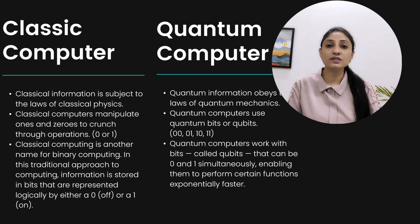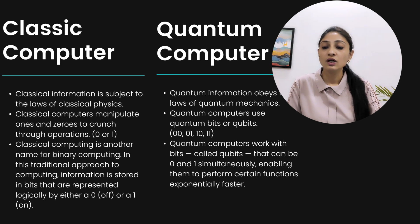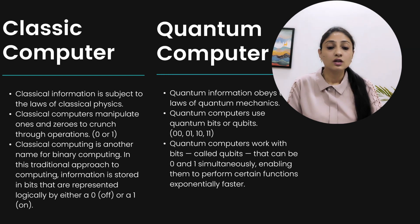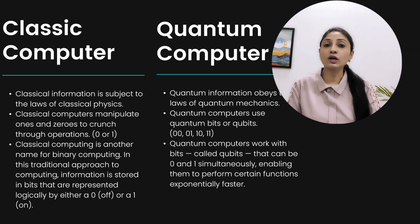More data can be represented with four combinations — 00, 01, 10, and 11. Classical computing is essentially binary computing, where information is stored in bits represented as zeros or ones. Quantum computers work with qubits that can be zeros and ones simultaneously through superposition, enabling them to perform certain functions exponentially faster. This is why quantum computers are much faster than classical computers — they store and process larger amounts of information.